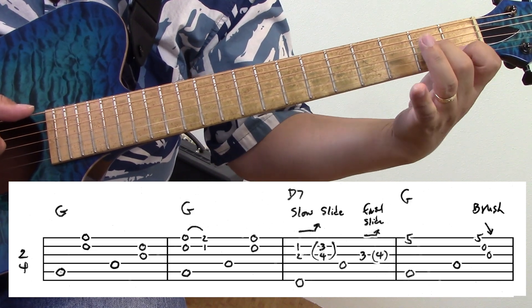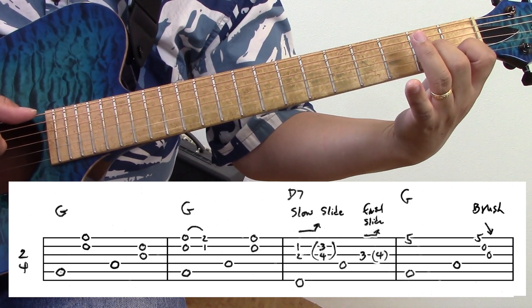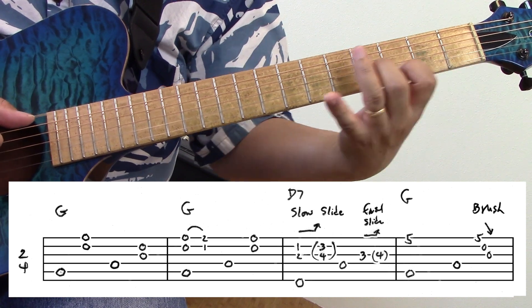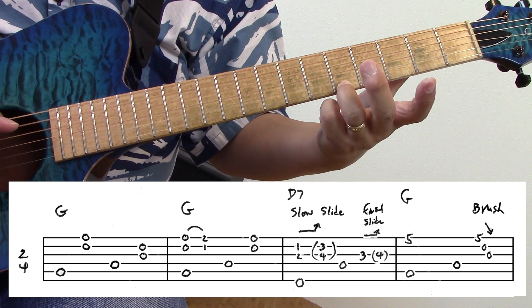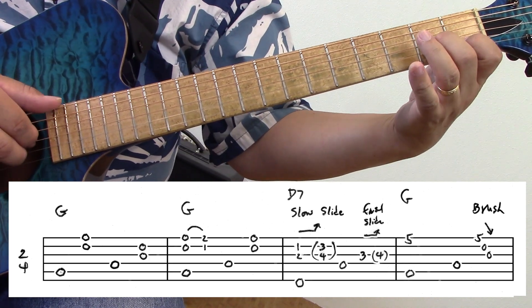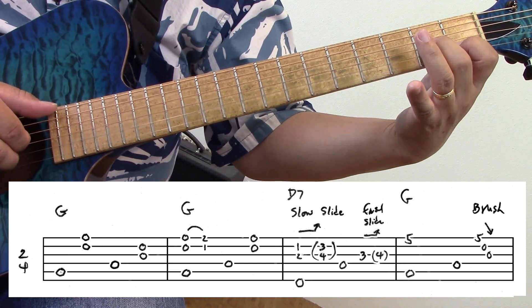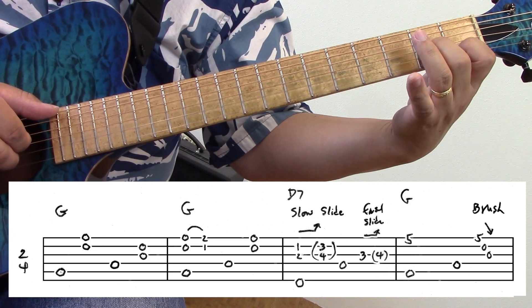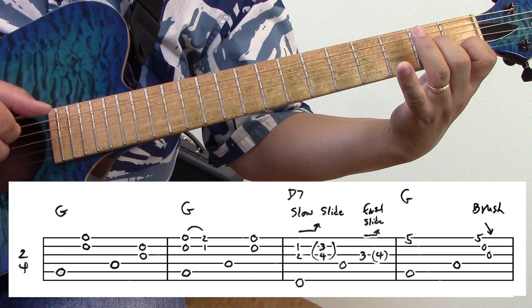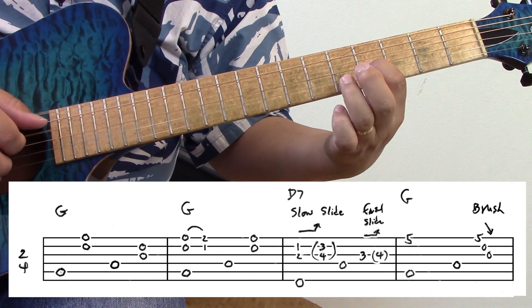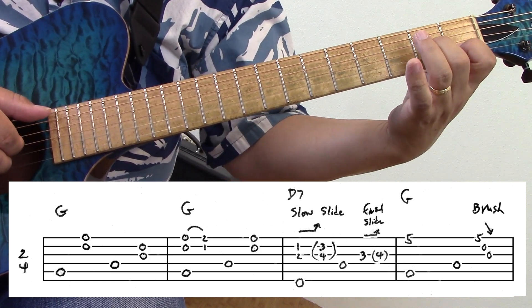Here's phrase number two. I start with these two fingers. So this is a slow slide. Notice the arrow. So this is a slower slide versus this is a quicker one. So there's phrase number two.